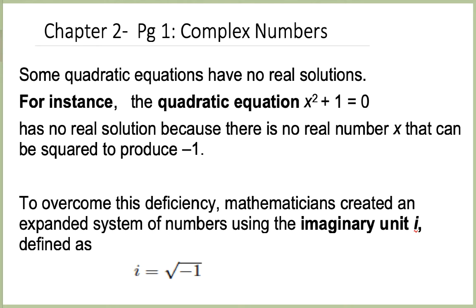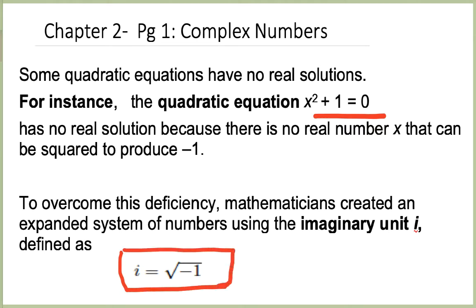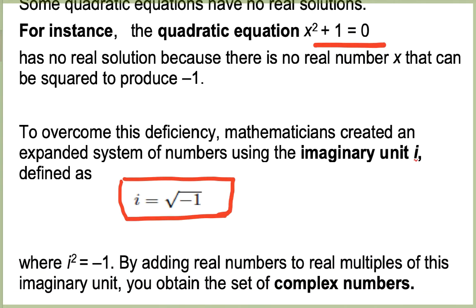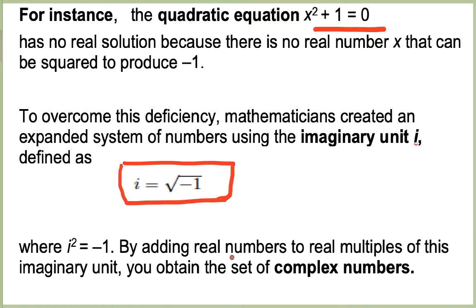Hello everyone. Today we are going to be looking at complex numbers. Complex numbers came about because equations like x squared plus 1 equals 0 had no real solutions. In order to take care of this problem, mathematicians created an expanded number system using the imaginary unit i. We define i as equal to the square root of minus 1, where i squared equals minus 1. We added real numbers to real multiples of this imaginary unit and got the set of complex numbers.